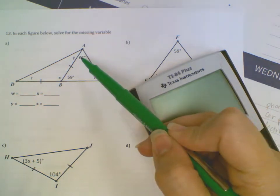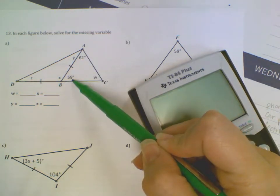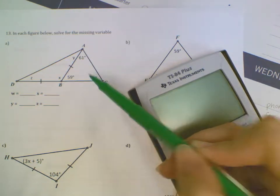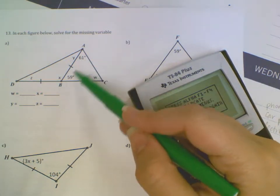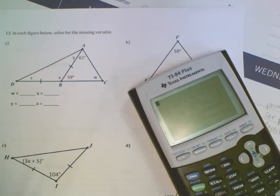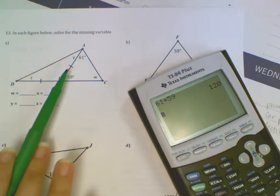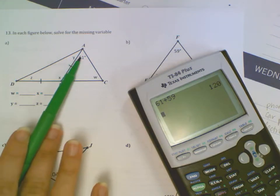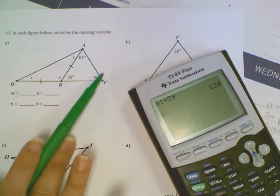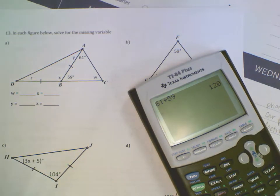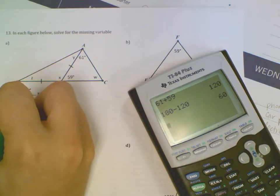I like to add these together and subtract from 180, so I'll do 61 plus 59 gives me 120. So I've already used 120 degrees for these two angles, so I need to figure out how much would be left to make this triangle 180 degrees. So 180 minus 120 gives me 60 degrees, so W must be 60 degrees.